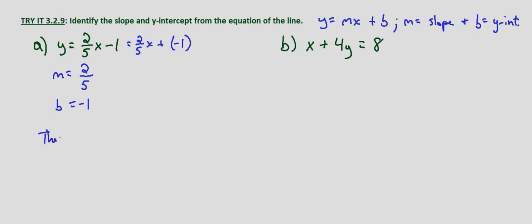So the slope is 2/5 and the y-intercept is 0, negative 1.